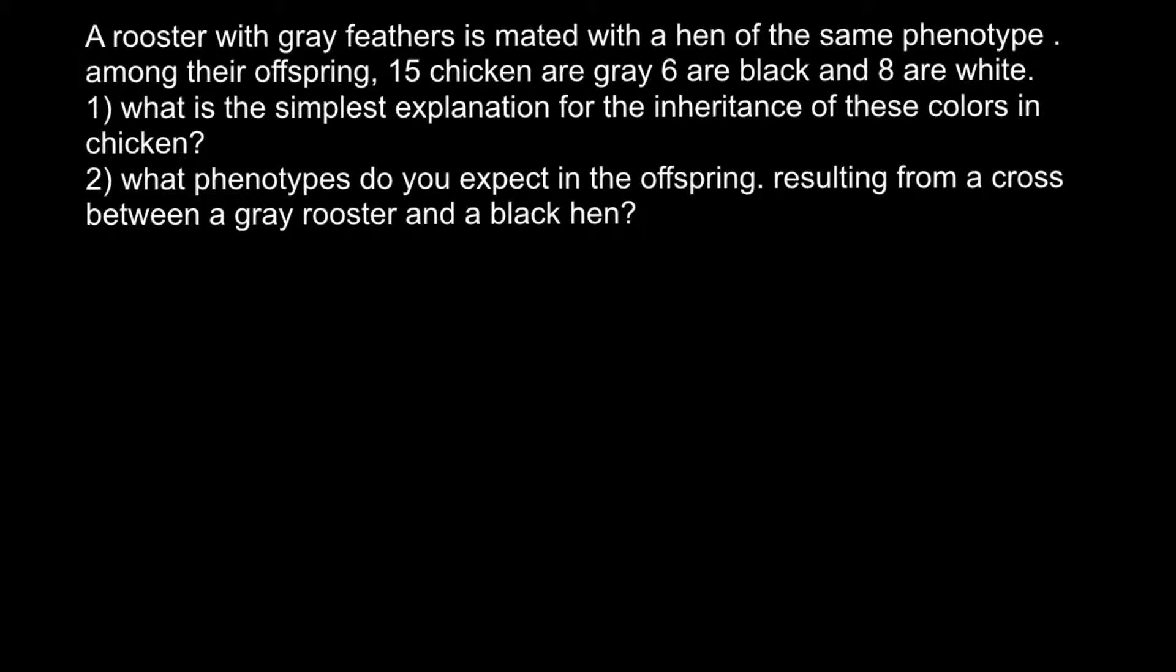Whenever we have one trait that in the following generation produces three different colors, that means we have incomplete dominance. When we have one locus with two alleles, combinations can be as follows: capital A capital A, capital A small a, and small a small a. Gray color would be produced by the heterozygous genotype.